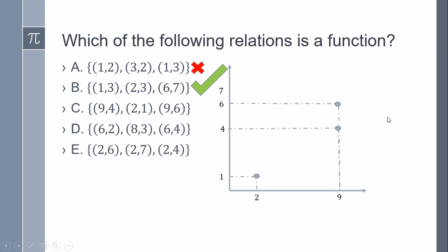Option D has (6,2), (8,3), and (6,4). This is not a function because 6 has two values, 2 and 4, but each value in the domain should map to just one value in the range.